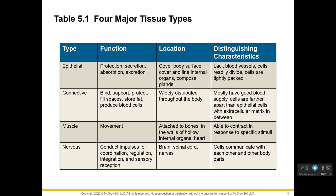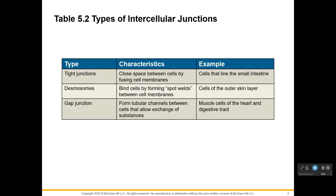Muscle is for moving things — it can be attached to bones to move them, inside organs to move contents, and in the heart to move blood. Muscles are able to contract from nervous stimulus, which brings us to nervous tissue, which conducts impulses to communicate with other cells, coordinate, receive information, and decide what to do. We find nervous tissue in the brain, spinal cord, and the nerves coming off of those — it's for cellular communication.